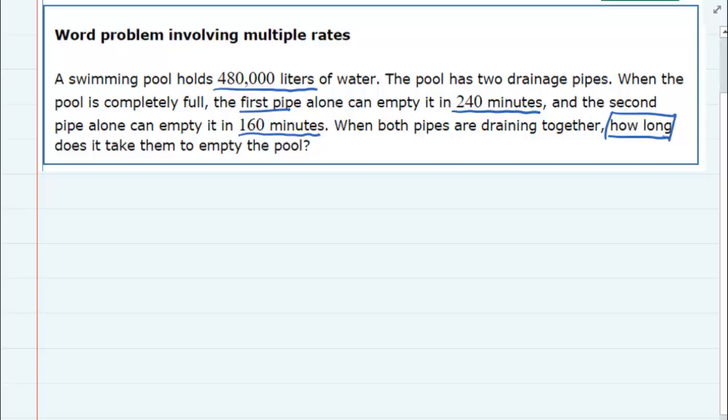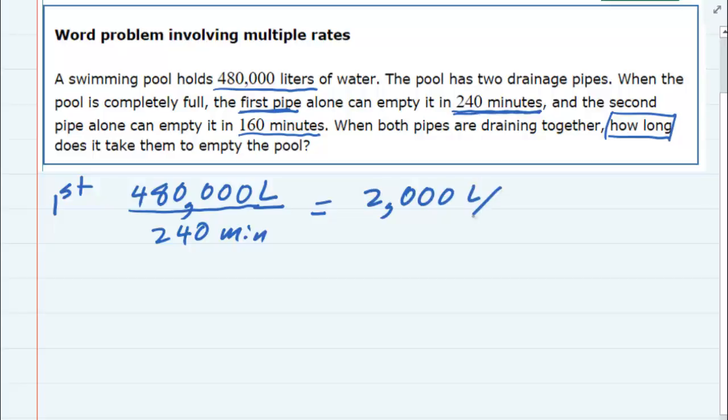So what we need to do is find out the rates for each one of these pipes. So I'm going to start off with the first pipe that says it can empty it in 240 minutes. So the first pipe, how long will it take to empty the pool? Well the pool is 480,000 liters and if we divide that by 240 minutes, and I'll put my units in here, liters and minutes, then I see that that is draining at a rate of 2,000 liters per minute.